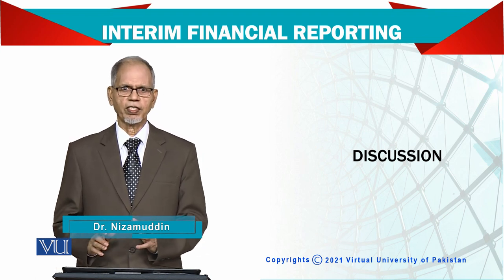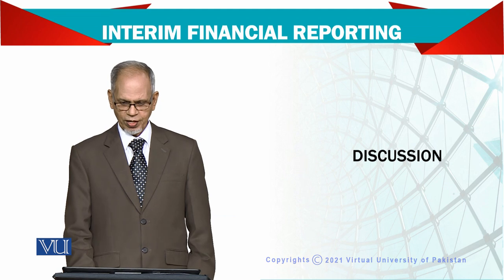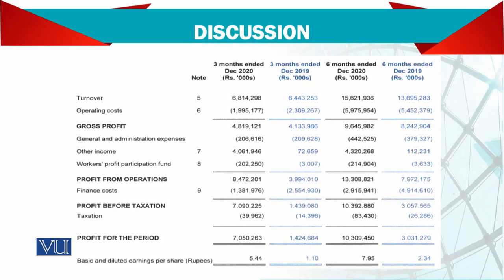Let's have a discussion on a practical question. This question is taken from a published account. I avoided the name of the company — even the directors and everything was there, but I avoided all that. Simple quarter ending 31st December, 3 months ending quarter 31st December 2020, and 3 months ending December 2019.